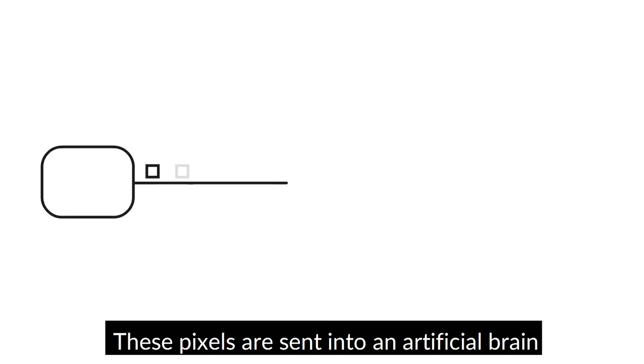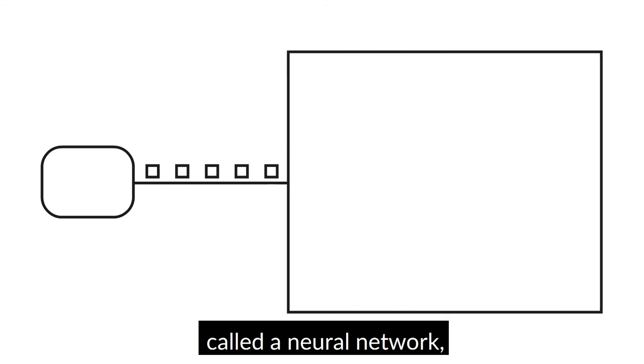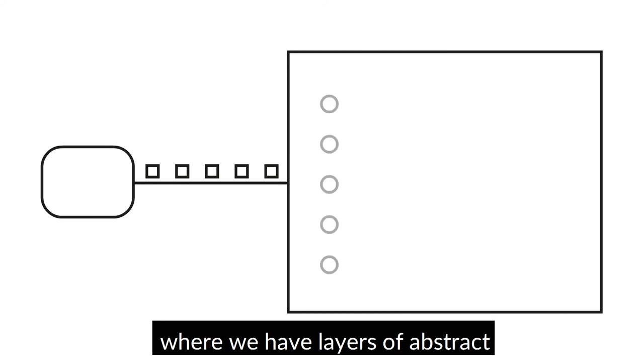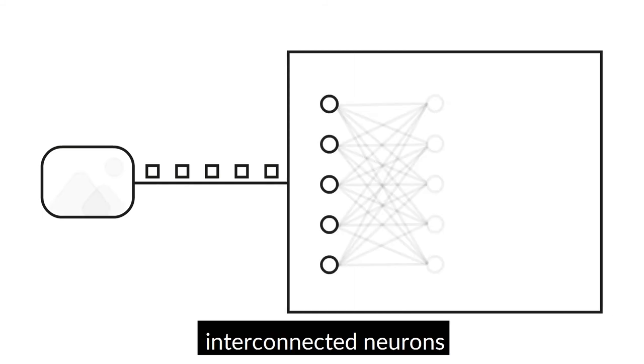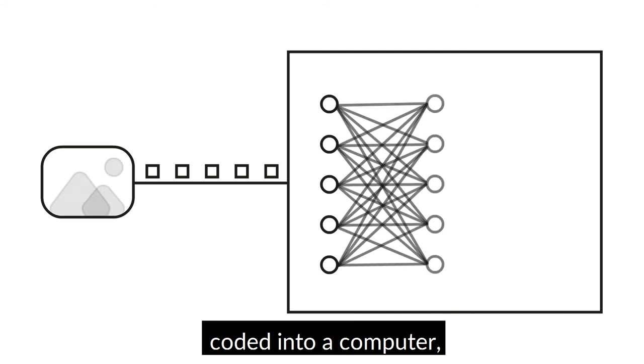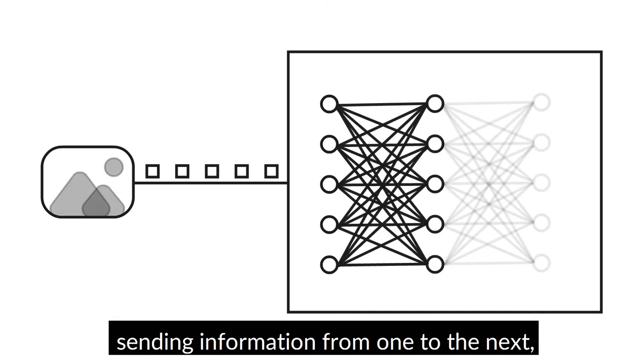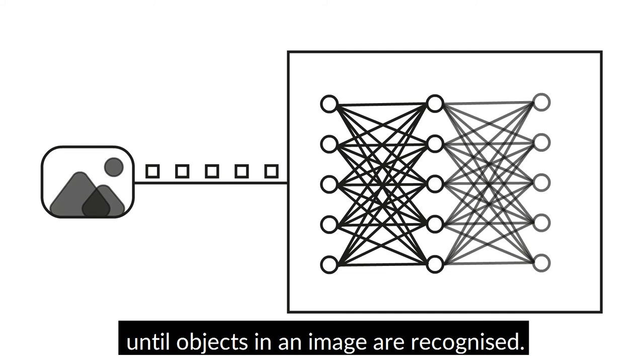These pixels are sent into an artificial brain called a neural network, where we have layers of abstract interconnected neurons coded into a computer, sending information from one to the next until objects in an image are recognised.